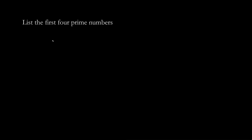What are the first four prime numbers? We have two, three, five, and seven. We do not consider one to be prime. Prime numbers can only be broken down to itself and one.